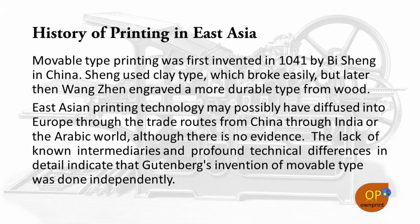History of printing in East Asia: movable type printing was first invented in 1041 by Bi Sheng in China. Bi Sheng used a clay type which broke easily, but later Wang Zhen engraved a more durable type from wood. East Asian printing technology may possibly have diffused into Europe through trade routes from China through India or the Arabic world, although there is no evidence. The lack of intermediates and the profound technical differences in details indicate that Gutenberg's innovation of movable type was done independently.